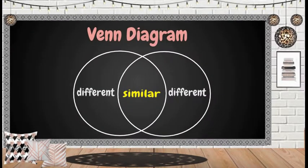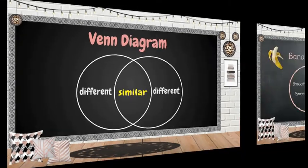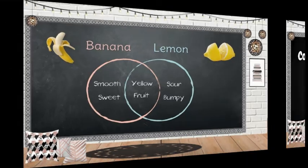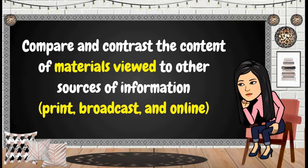A Venn diagram is ideally used to show similarities and differences between two objects. Take a look at the given example. On the opposite sides are the differences of the objects being compared, while in the middle are their similarities. Comparing and contrasting content of materials viewed or read to other sources of information allows you to get a more comprehensive view of topics.